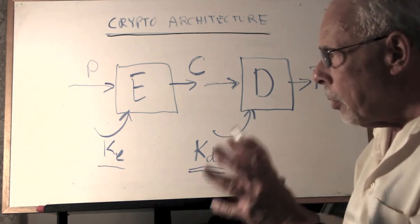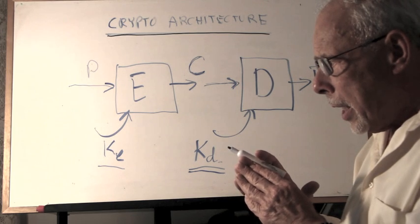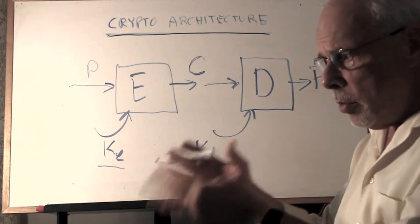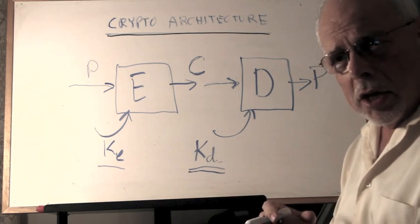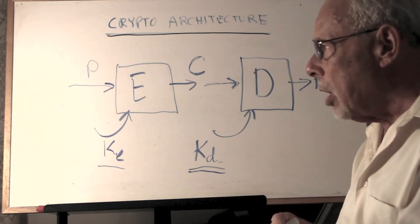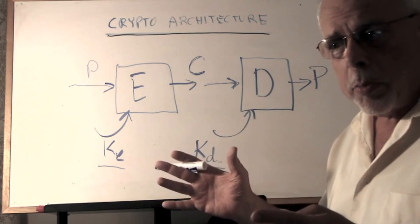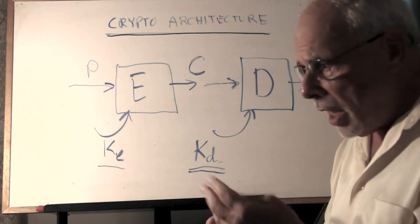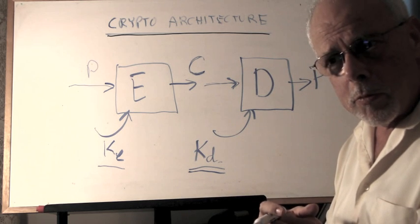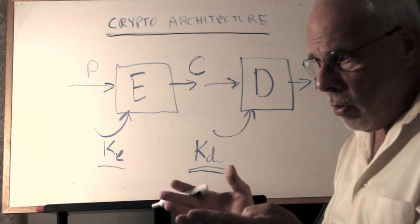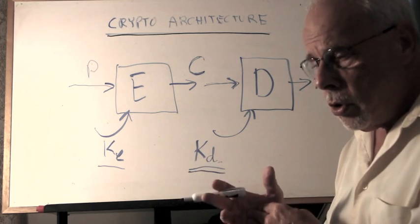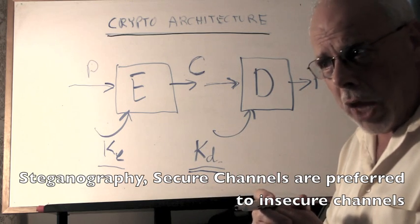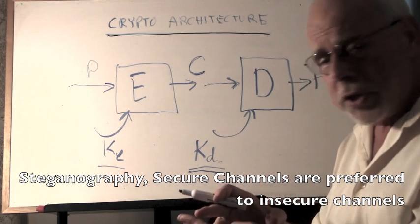Now, first of all, just a reminder: we use insecure channel when we have to. Ideally, we will use steganography so that Alice passes Bob the secret and the hacker doesn't even know that the secret was passed, so he is not trying to recover it. The second best choice is to use a secure channel. That if he knows that the secret was passed, the hacker would know he cannot crack the secure channel. That's why it's called secure.